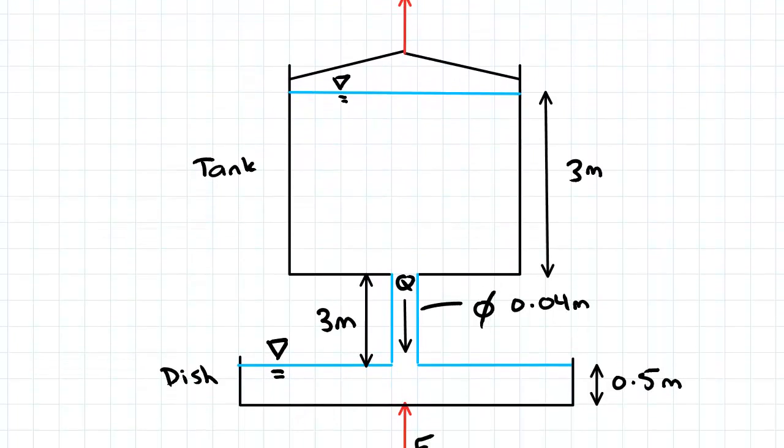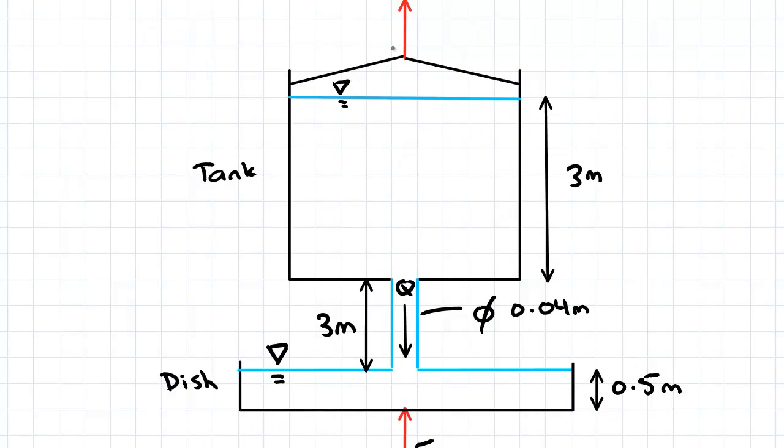So here is our diagram. We've got a tank and we've got a dish below it. There's a hole in the tank, so there's a flow out of the tank and a cable supporting it.